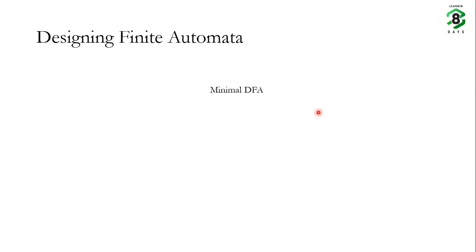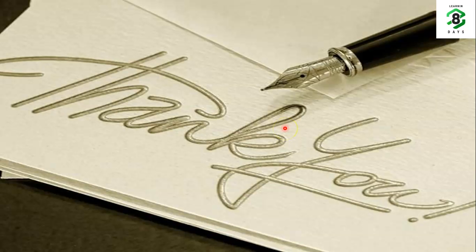Designing a minimal DFA is not easy. So we start from a DFA and minimize it. But even designing a DFA can be quite difficult for some problems, so we can start with an NFA, convert the NFA to a DFA, and then minimize the DFA. This part — converting NFA to DFA — is not yet known to us. In the next class we will look at problems and discuss how to convert NFAs to DFAs.